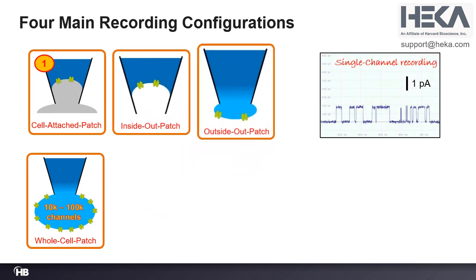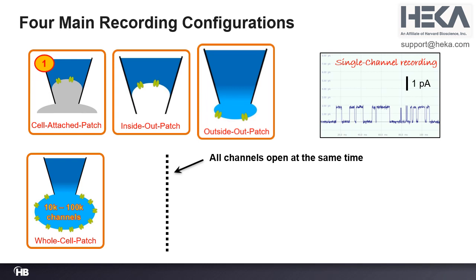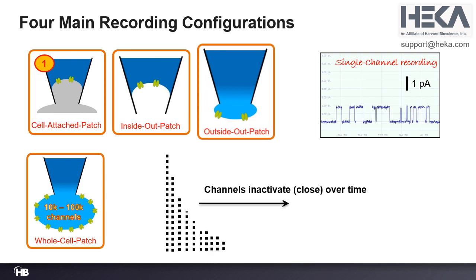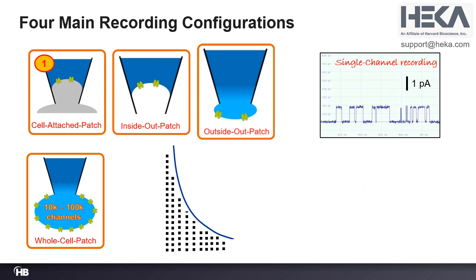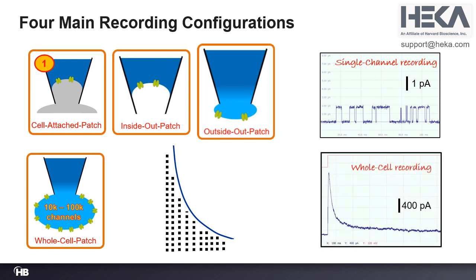The top three configurations — cell-attached, inside-out, and outside-out — are usually used for single channel recordings. In a whole-cell patch recording, all those channels are activated at the same time, so all the openings add up on top of each other. These channels have an intrinsic property where they deactivate at some point and close, so over time more and more channels close and the overall amplitude comes down — therefore a whole-cell recording looks like a decaying current trace.